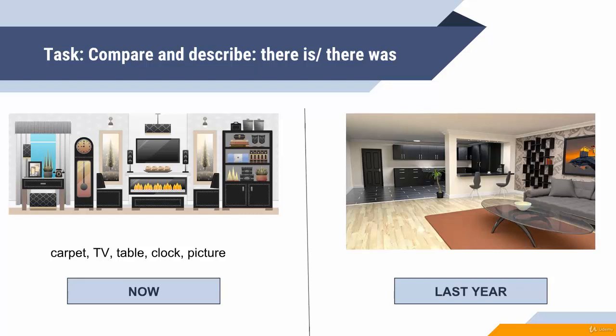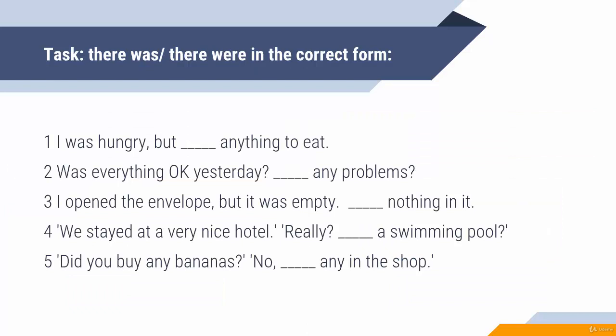For example: there is a carpet now, but there wasn't last year — something like that. In the second exercise, you need to write down the correct form of there was or there were. The exercises are really easy. Pause the video, do them, and we are starting the checking right now.